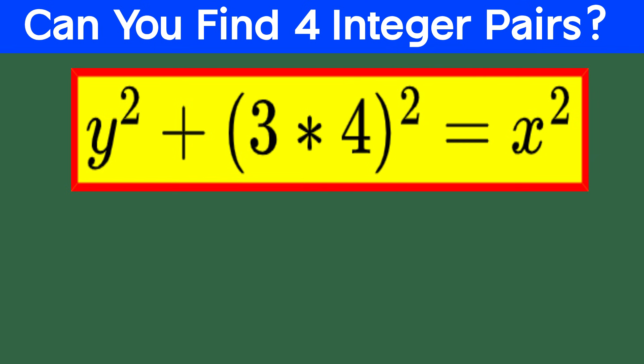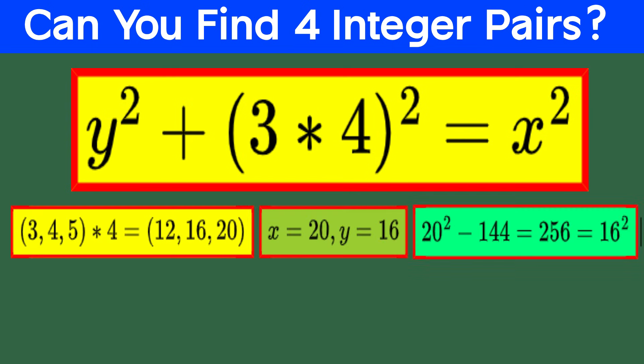So, we've squared up 3 times 4, and since 3 and 4 are part of the famous Pythagorean triple 3, 4, 5, we've got two options for k, it can be 3 or 4. First up, we scale the triple by 4, so we get the new triple, 4 times 3, 4 times 4, and 4 times 5, or 12, 16, and 20. Let's see it in action. 20 squared minus 144 equals 256, which equals 16 squared. Looking good, right?